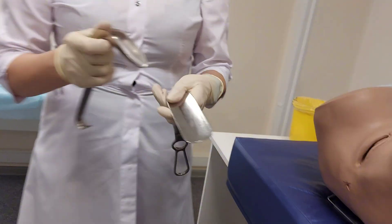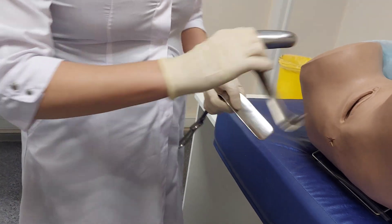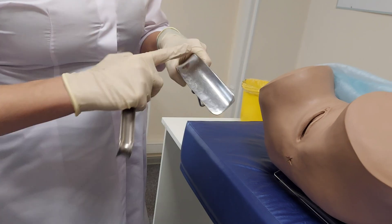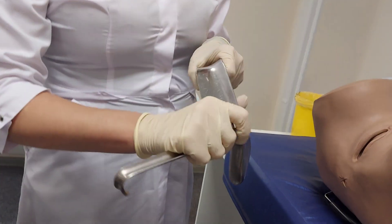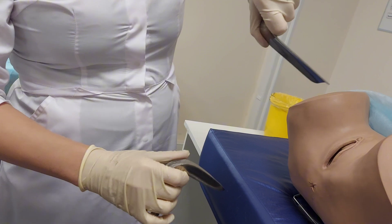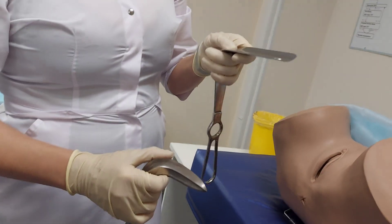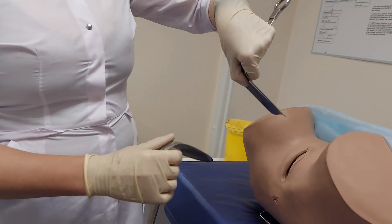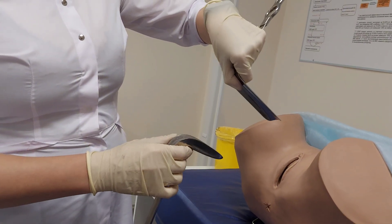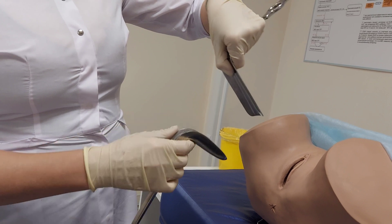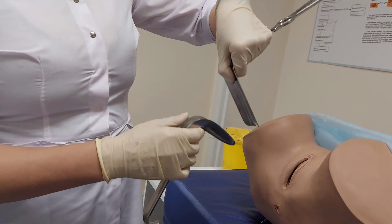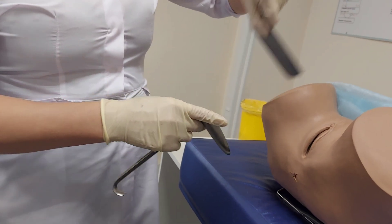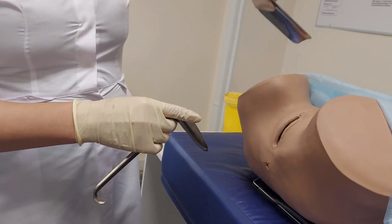This is spoon-like speculum. We can insert it into the posterior fornix of the vagina. This is in Russian we call it podium, it means lift. This is anterior speculum for the anterior fornix or anterior wall of the version. This type of speculum allows you to manipulate with instruments but this needs an assistant who will stand and keep it in his hand.